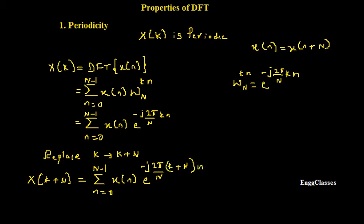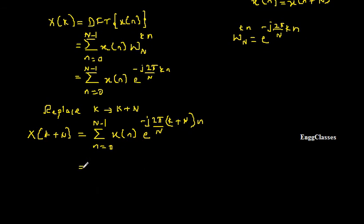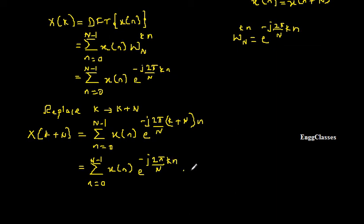Simplifying further by spreading the two terms in the exponent, using the rule e to the power A plus B equals e to the power A into e to the power B, we get: summation N equal to 0 to N minus 1, X of N, e to the power minus J 2 pi divided by capital N into K times small N, multiplied with e to the power minus J 2 pi divided by N into capital N times small N.